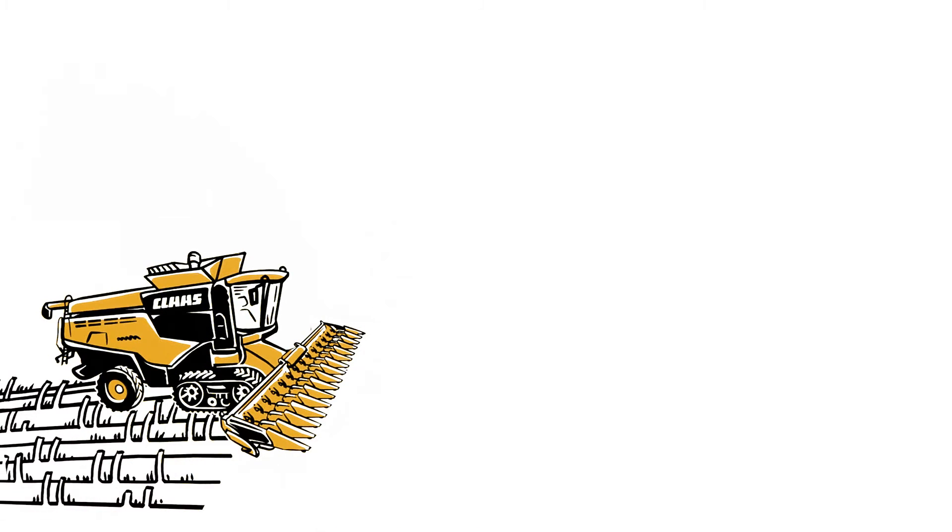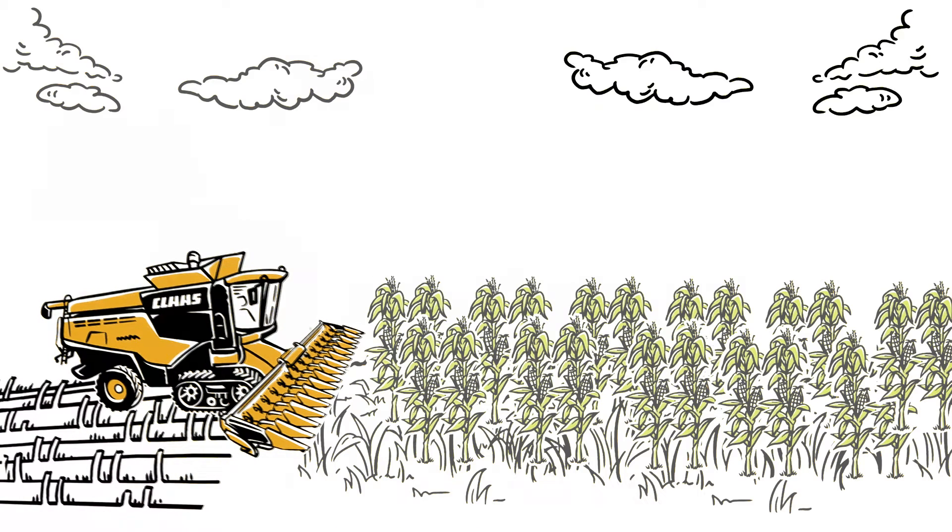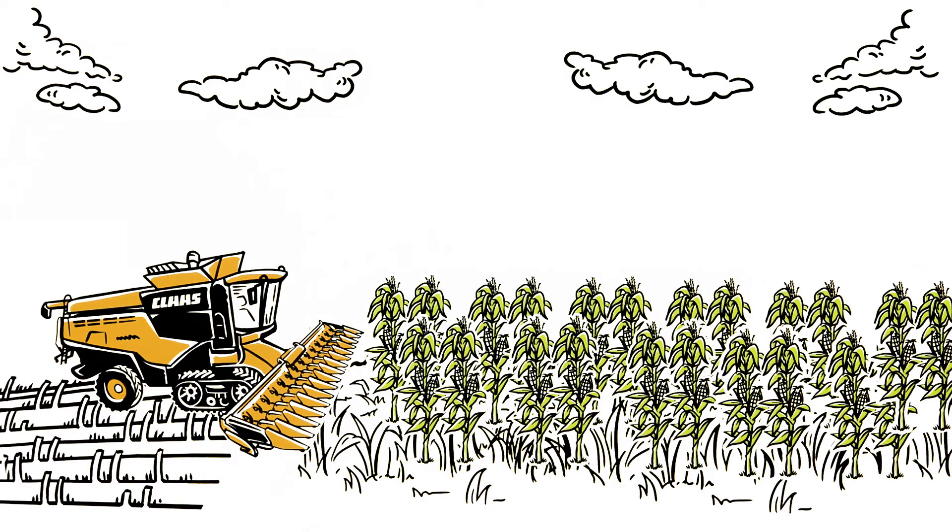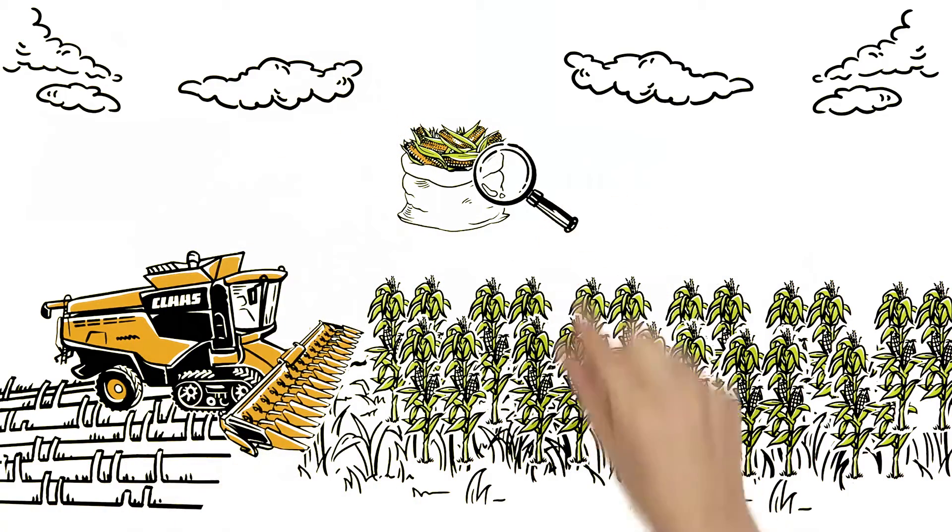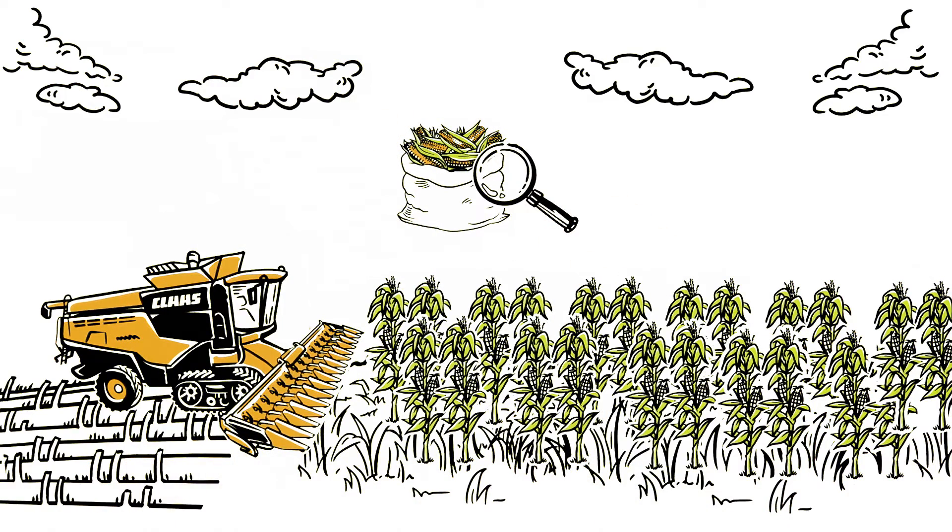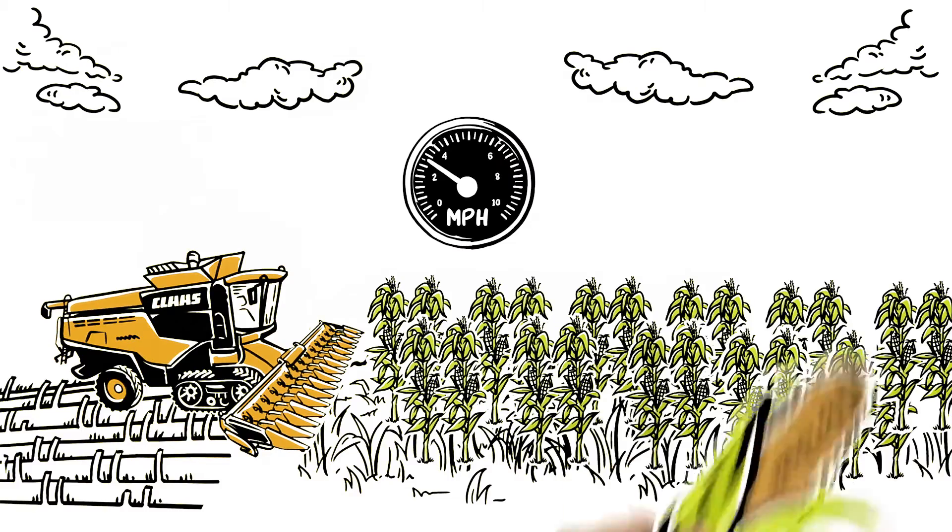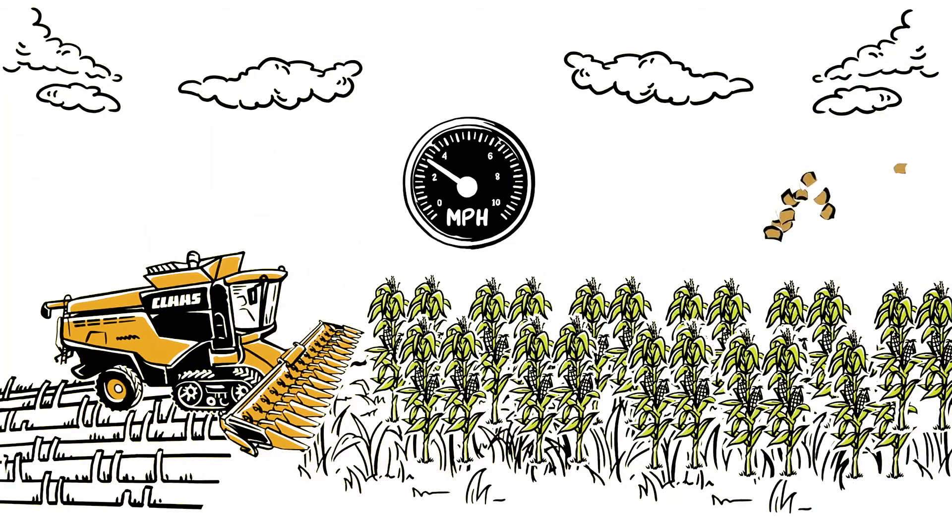The Lexion Combine, for example, instantly detects variations in a section of his field with high crop volume and optimizes for maximum throughput. The ground speed reduces. The separation and cleaning systems automatically adjust.